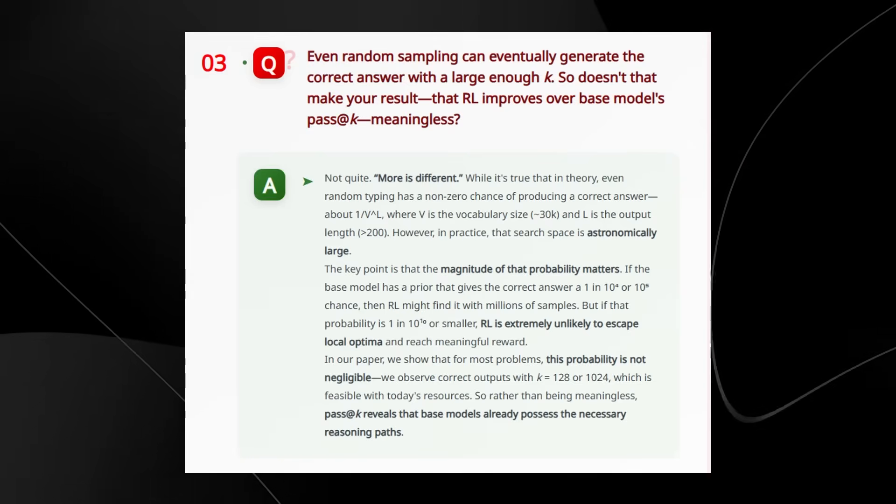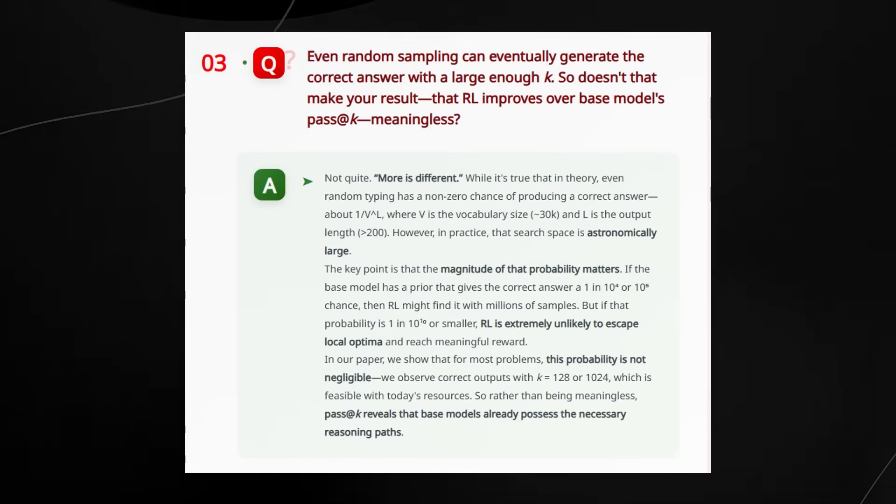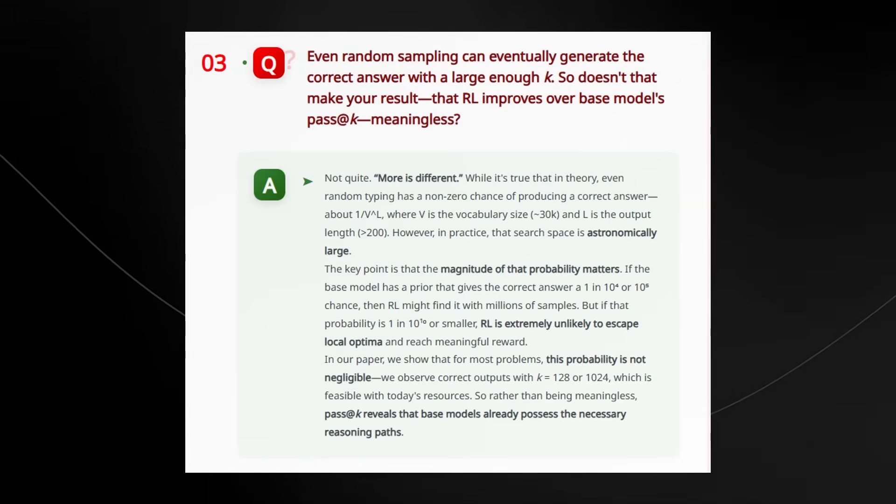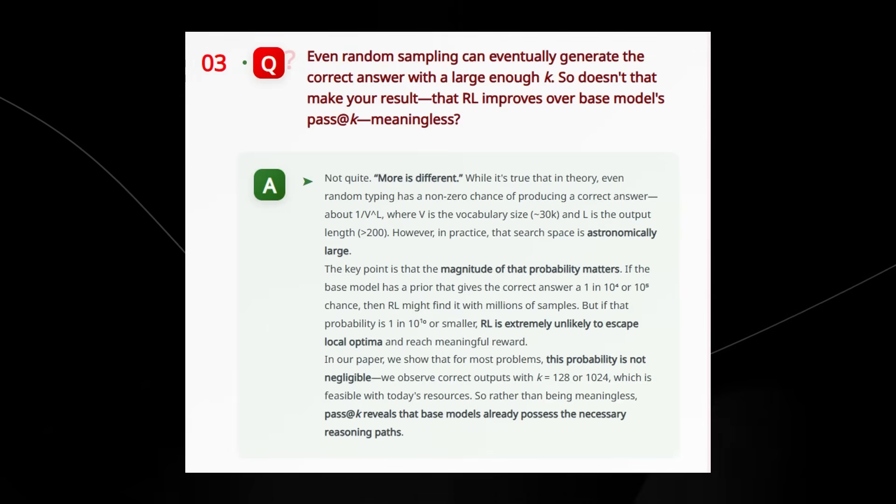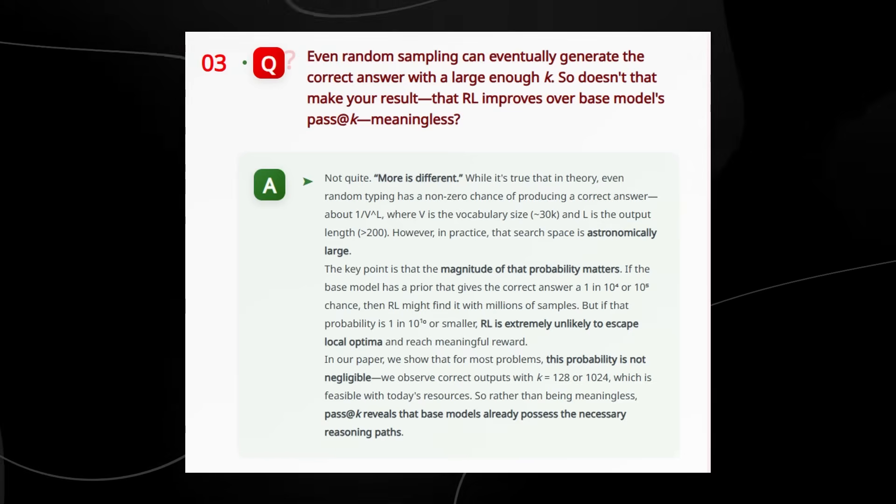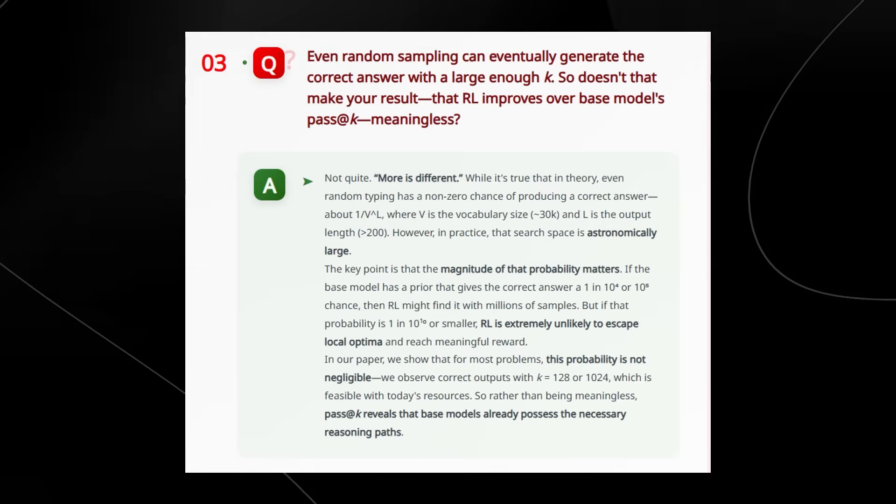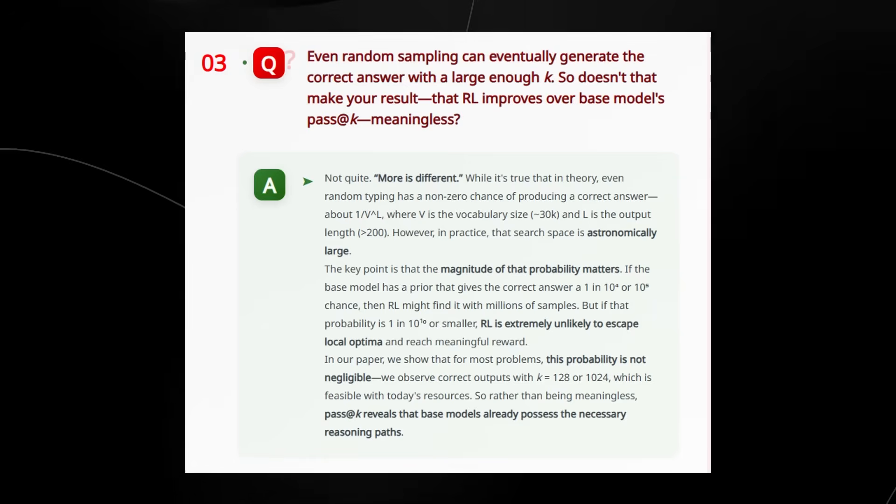The difference here is the probability. If the model has some real understanding, correct answers are sampled in a few hundred tries. If not, you'd need to sample trillions of tries, which is way beyond practical computing. And the reinforcement learning helps bias the model to pick better guesses earlier, but that doesn't discover new reasoning—it just shortcuts the model to the ones it already had.